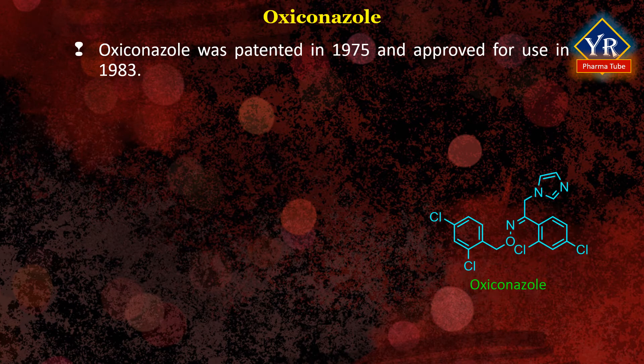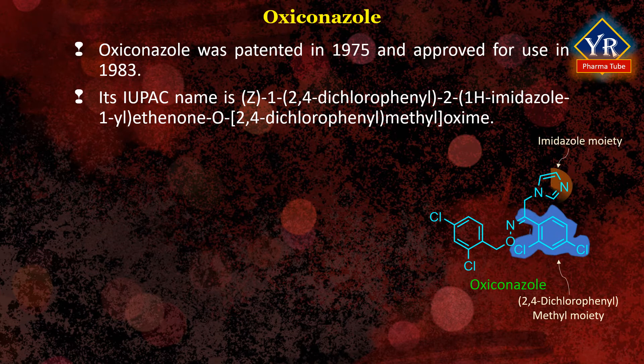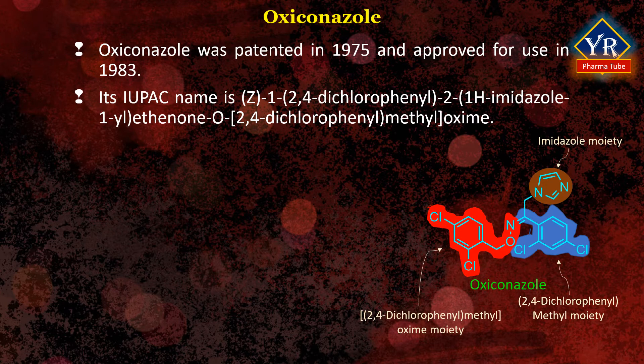The first drug of this lesson is Oxiconazole. Oxiconazole was patented in 1975 and approved for medical use in 1983. Its IUPAC name is 1-[2-(2,4-dichlorophenyl)-2-(1H-imidazol-1-yl)ethenone] ortho-2,4-dichlorophenylmethyl oxime mononitrate. It is an oxime orthoether — the 2,4-dichlorobenzyl ether of the oxime obtained by formal condensation of hydroxylamine with the carbonyl group of acetophenone in which the phenyl group is substituted by chlorines at positions 2 and 4, and one hydrogen of the methyl group is replaced by a 1H-imidazol-1-yl group.